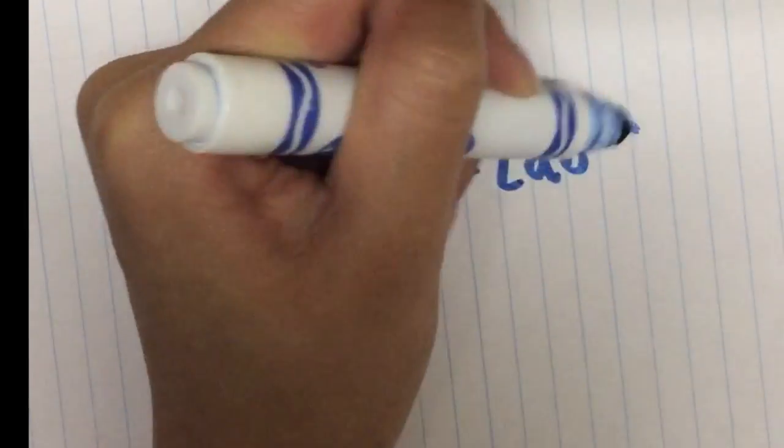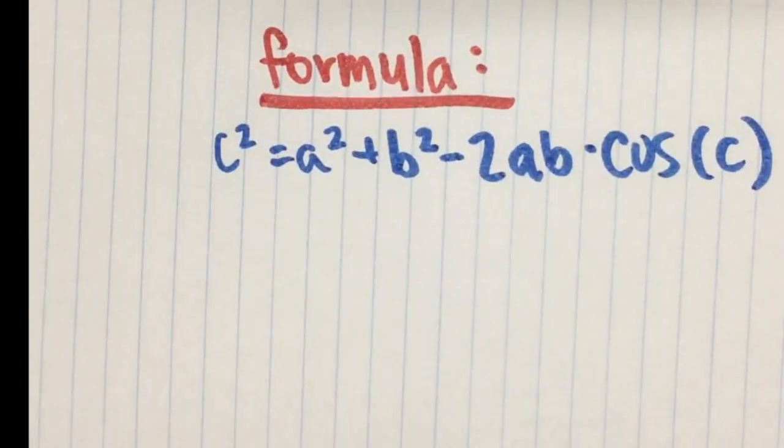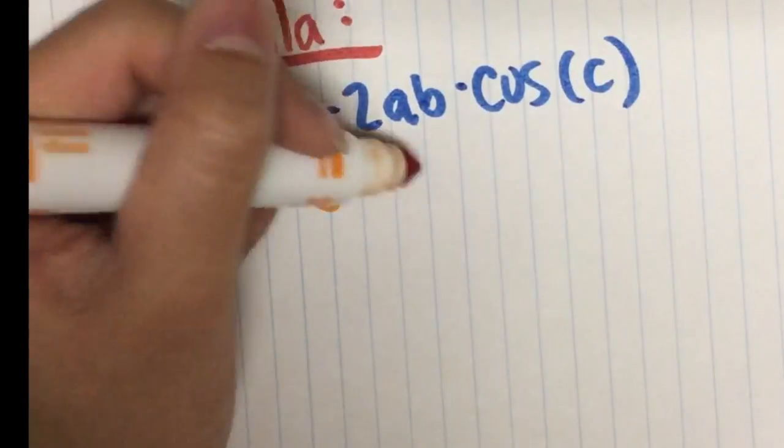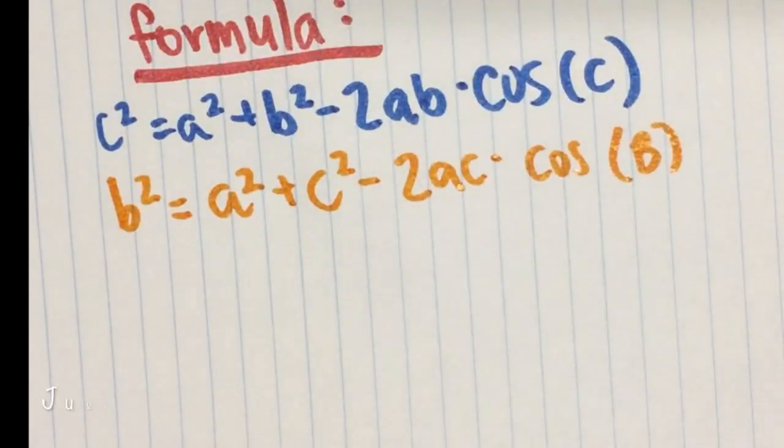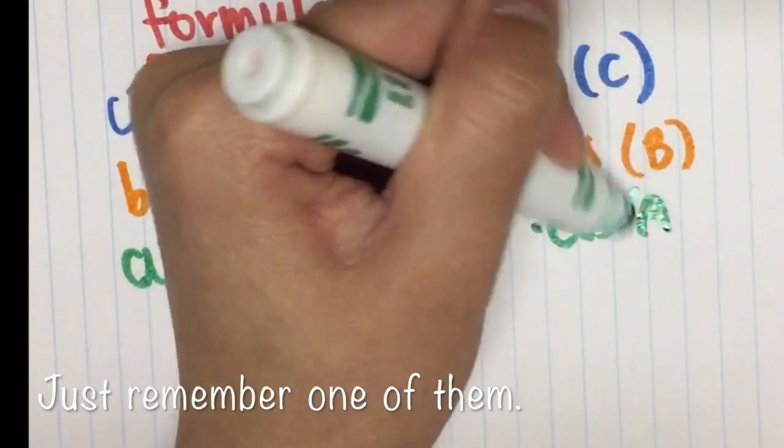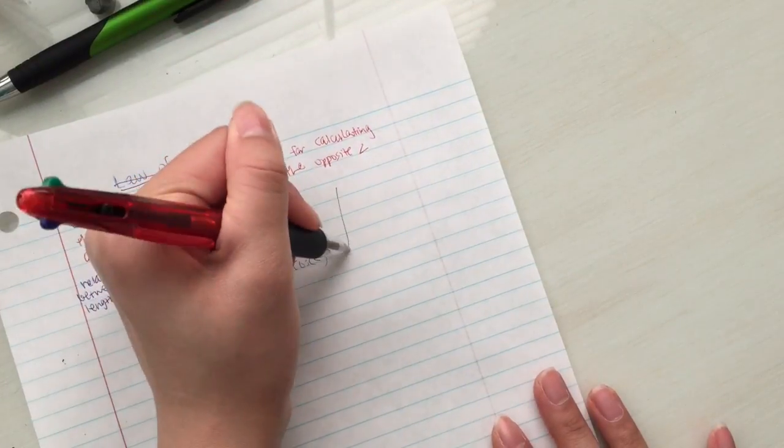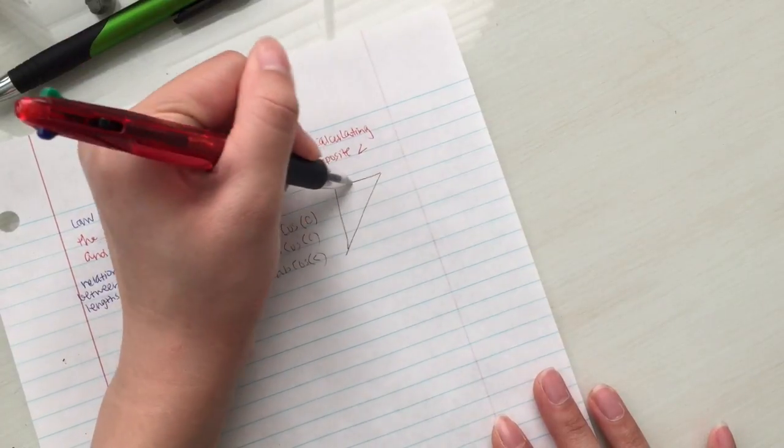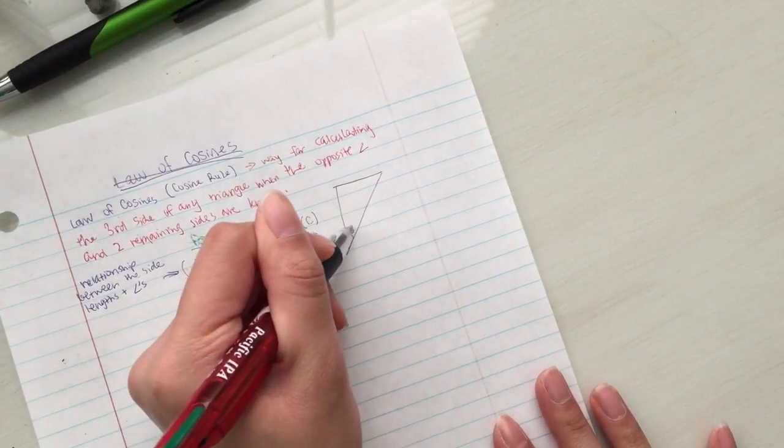You can switch the variables around, so that a squared equals b squared plus c squared minus 2bc times cosine of a, or b squared equals a squared plus c squared minus 2ac cosine of b. But it is easier to just remember one way, for example the c squared one, and change the variables as needed.